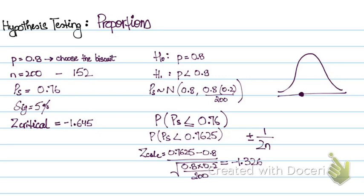So my Z critical value is 1.645. That is my, somewhere around here.